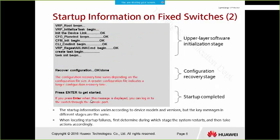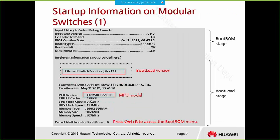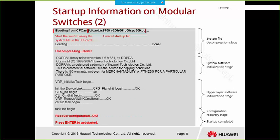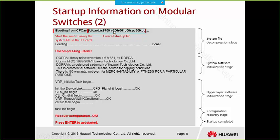On modular switches, the startup information is a little different. First is also the boot ROM stage, then it's the bootload stage. In the bootload stage, we can see the bootload version and the MPU model. The MPU — main processing unit — is like the main control board. Then it's the system file decompression stage, where we can see it starts the switch using the system file in the CF card, and the current startup file version is V2R1.